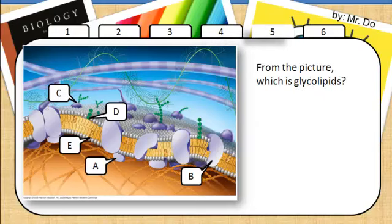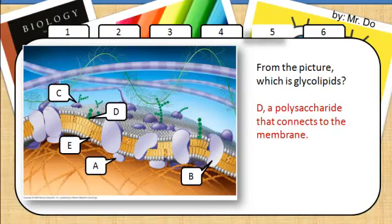Five. From the picture, which is glycolipids? That would be D. A polysaccharide that connects to the membrane.